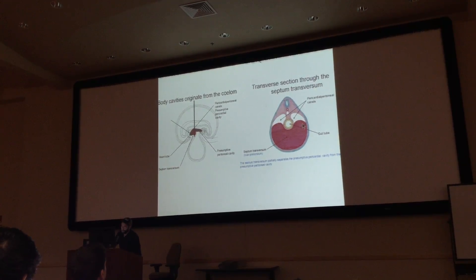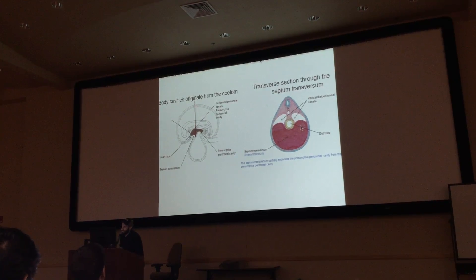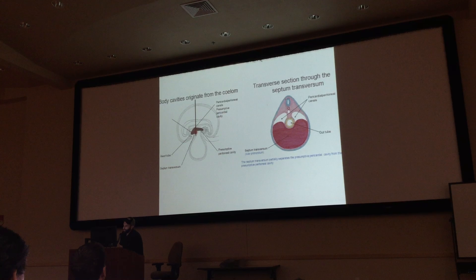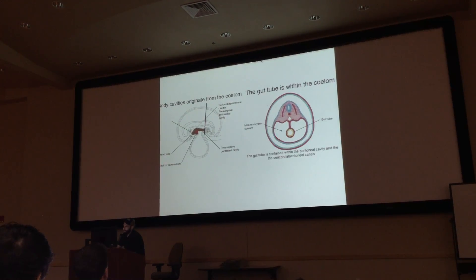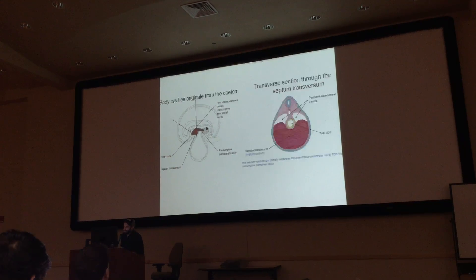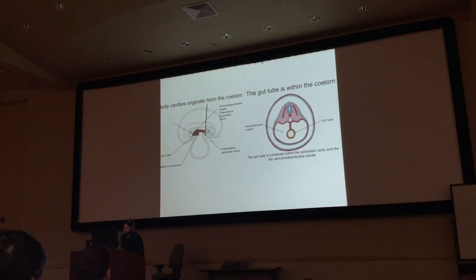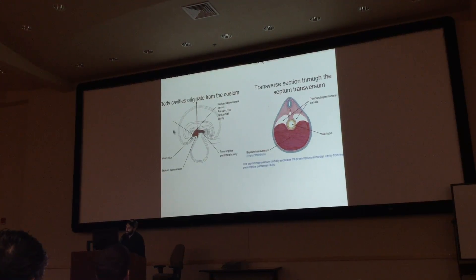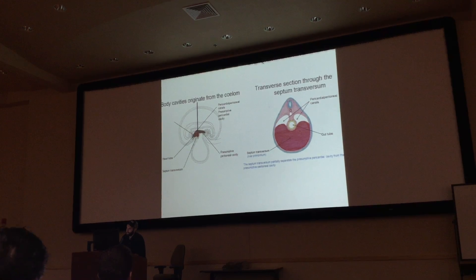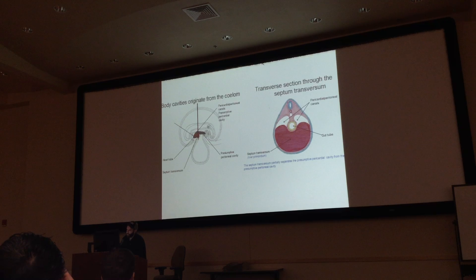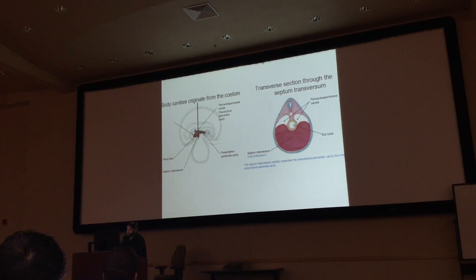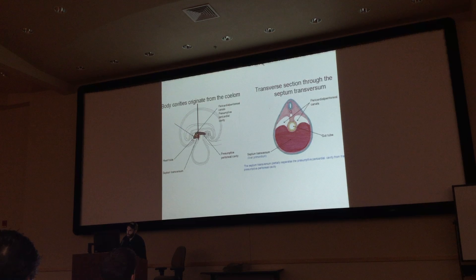The septum transversum is the first part of your diaphragm that forms. Anterior to the yolk sac is going to become your lung and thorax; posterior to the yolk sac is going to become your abdomen. Here's your midgut, hindgut, and foregut extending upward — the foregut will eventually become the stomach contents. Some of the foregut will also contribute to your actual thorax.